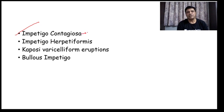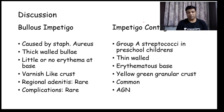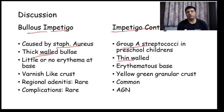Impetigo contagiosa is a bacterial infection caused by Streptococci. We have two types of Impetigo: Bullous impetigo caused by Staph aureus, and Impetigo contagiosa caused by group A Streptococci. Bullous impetigo has thick-walled bullae — intact bullae will be present — while Impetigo contagiosa will have thin-walled bullae, so usually bullae will not be present at the time of presentation.